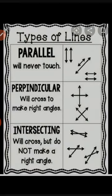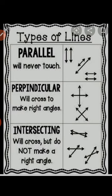Let's take a recap and see the difference between parallel, perpendicular, and intersecting lines. Parallel lines never touch each other. Perpendicular lines cross each other with the formation of a right angle. Intersecting lines cross each other but do not make a right angle.